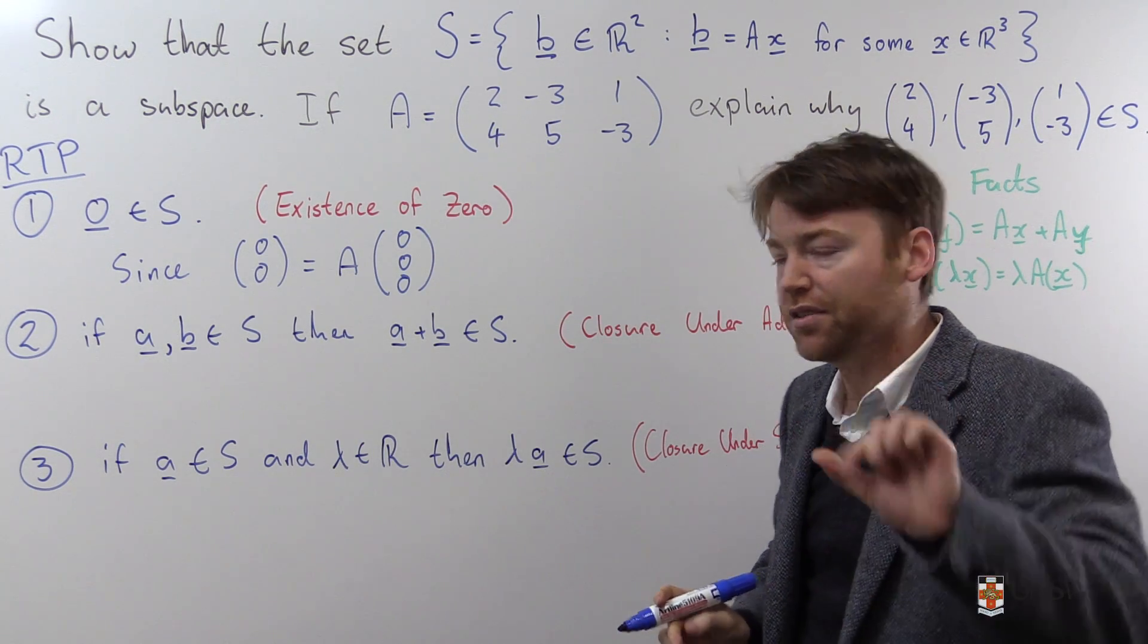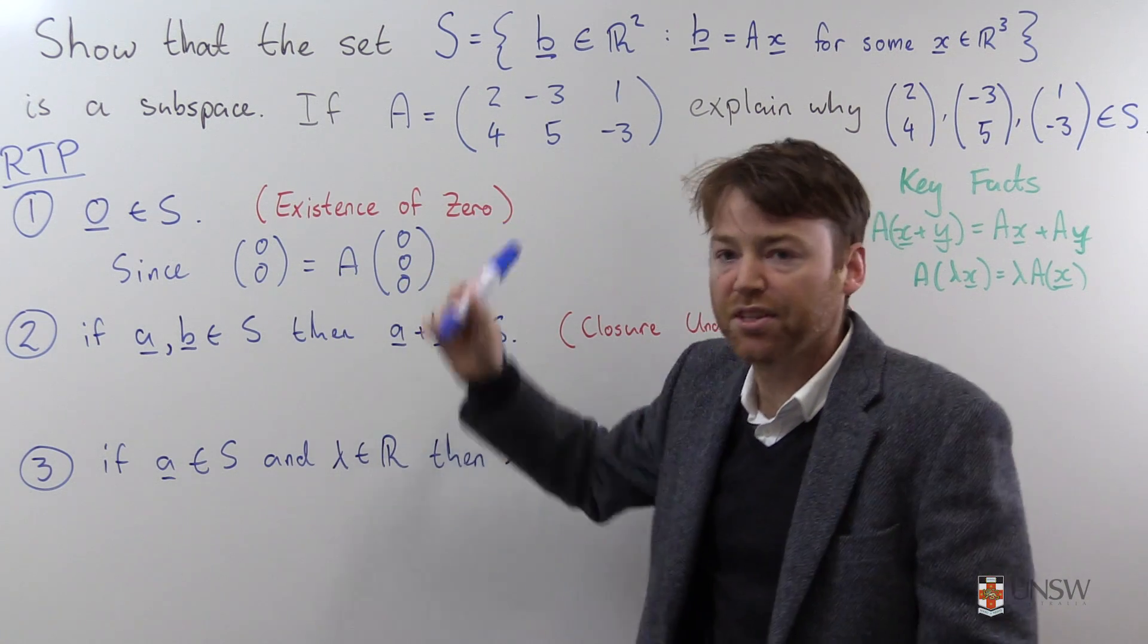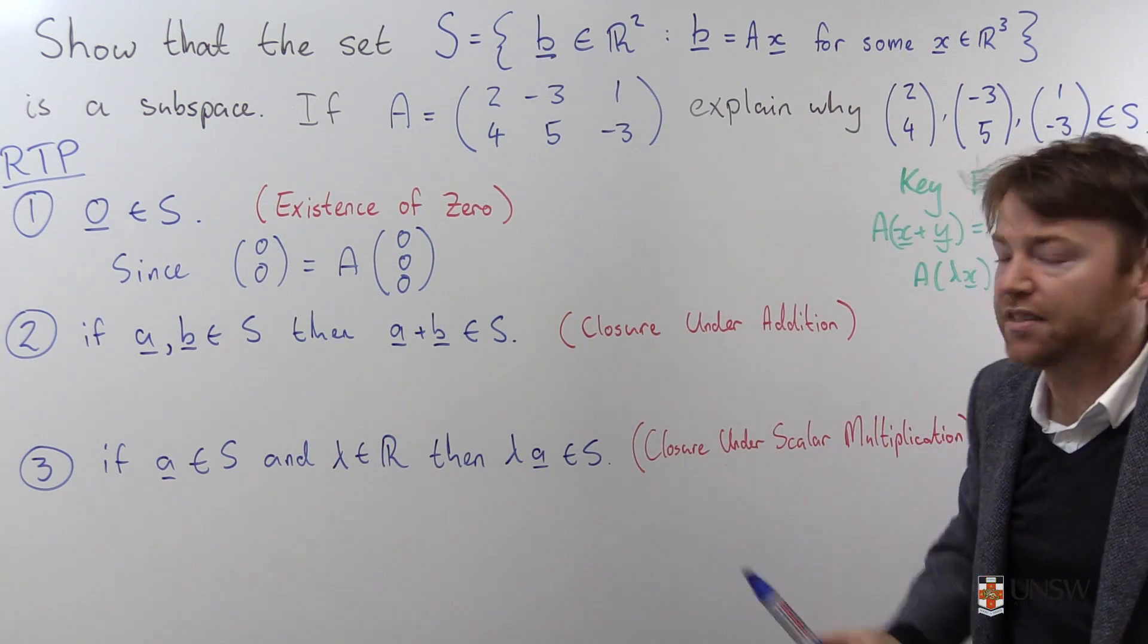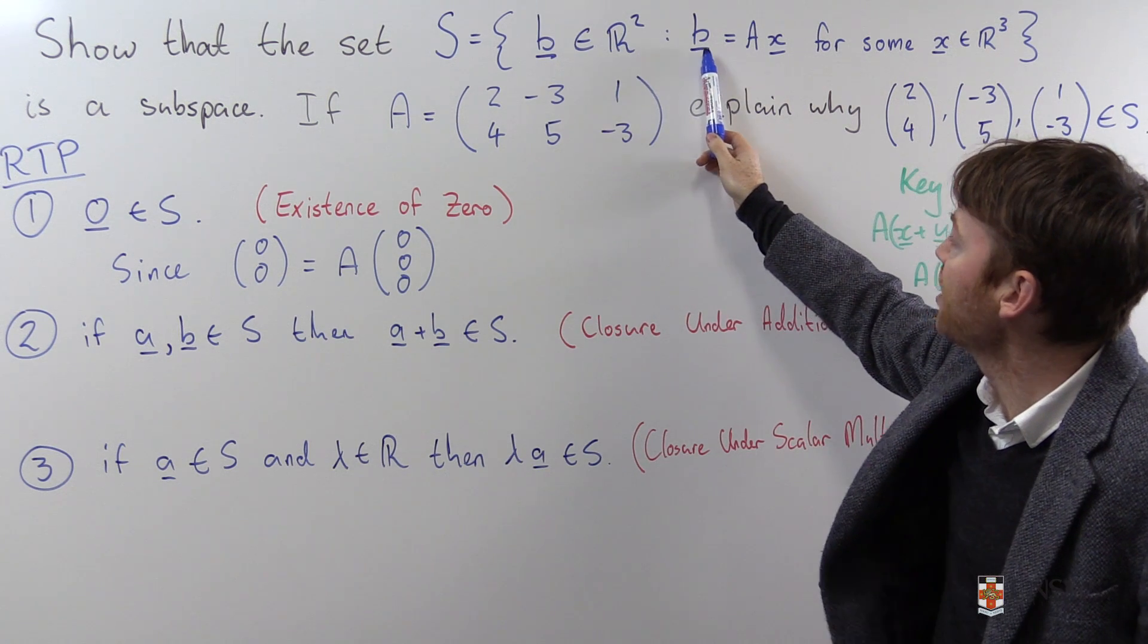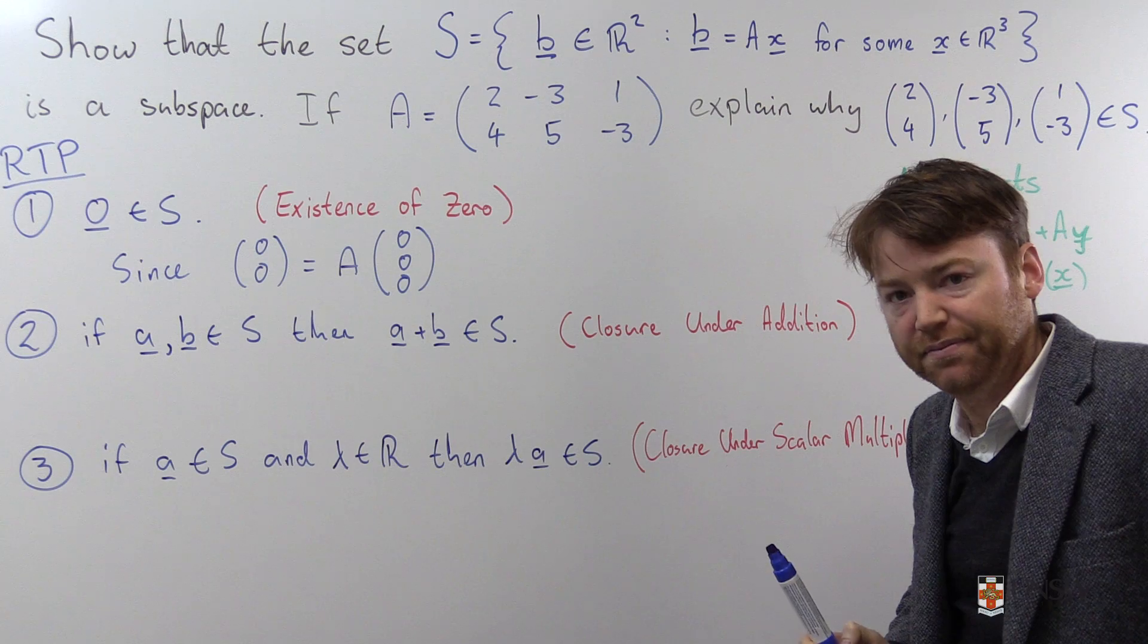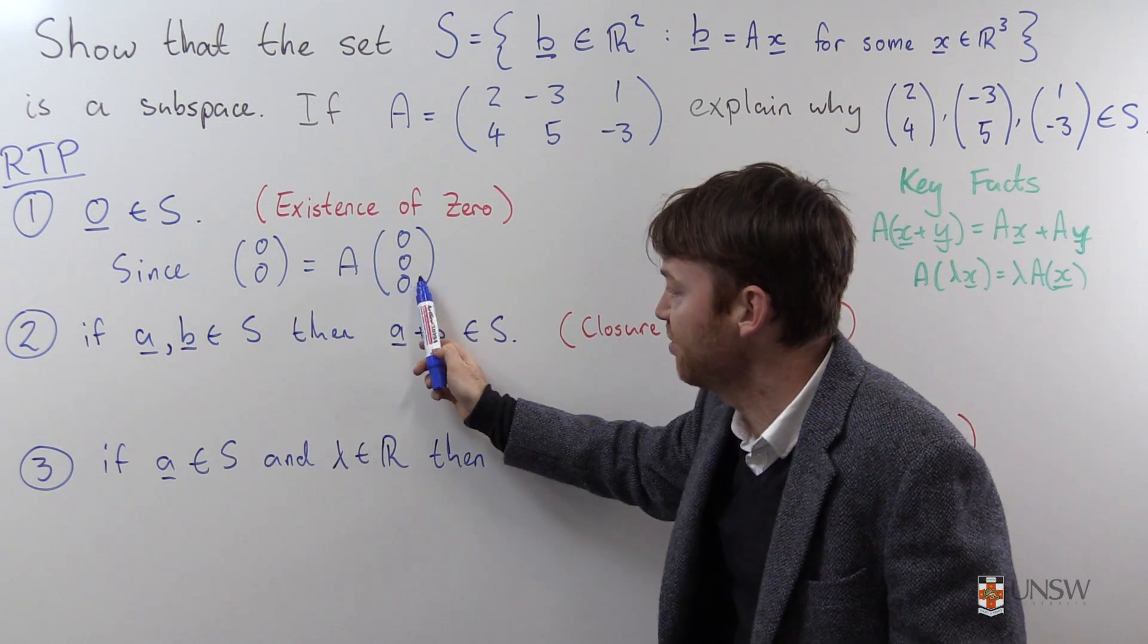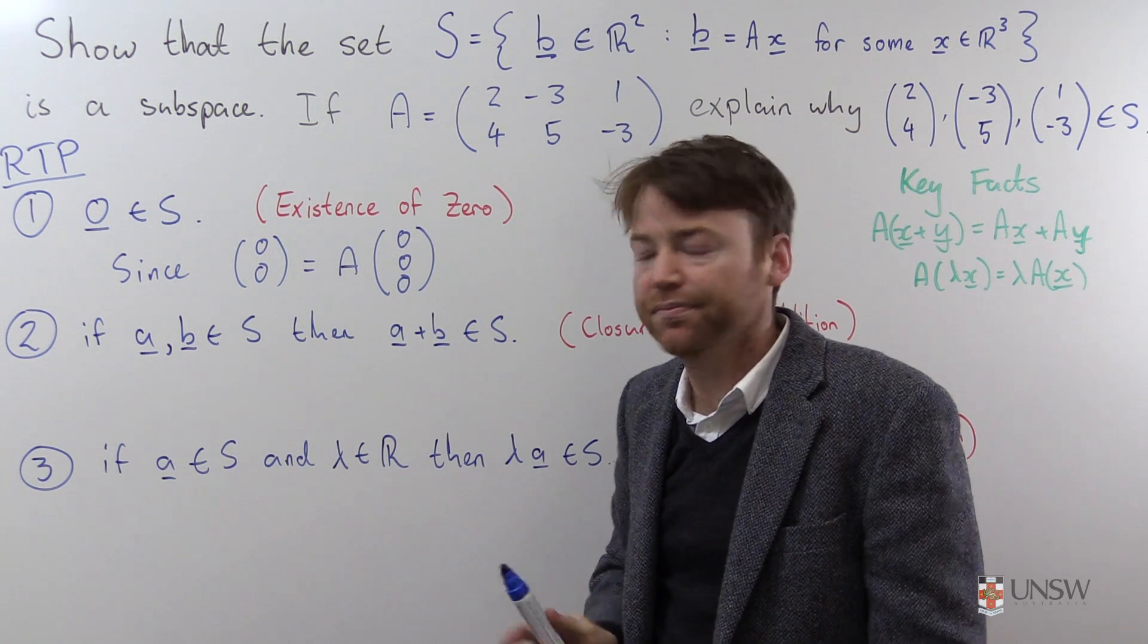then the 0 from R2 has this shape of being the matrix A times some vector from R3, which is exactly what our set requires. This set here is the set of all things from R2 that have this shape as being in the image if you like of the matrix A.